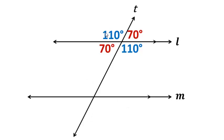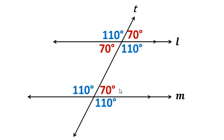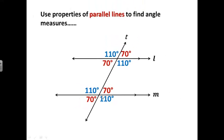We have parallel lines, so this angle corresponds with this angle, and corresponding angles are congruent. This angle is alternate exterior with this angle, and alternate exterior angles are congruent. This angle corresponds with this angle — corresponding angles are congruent — or we could have used alternate interior angles. There are a lot of different ways to fill it in because we have so many options. And the last one: vertical angles are congruent.